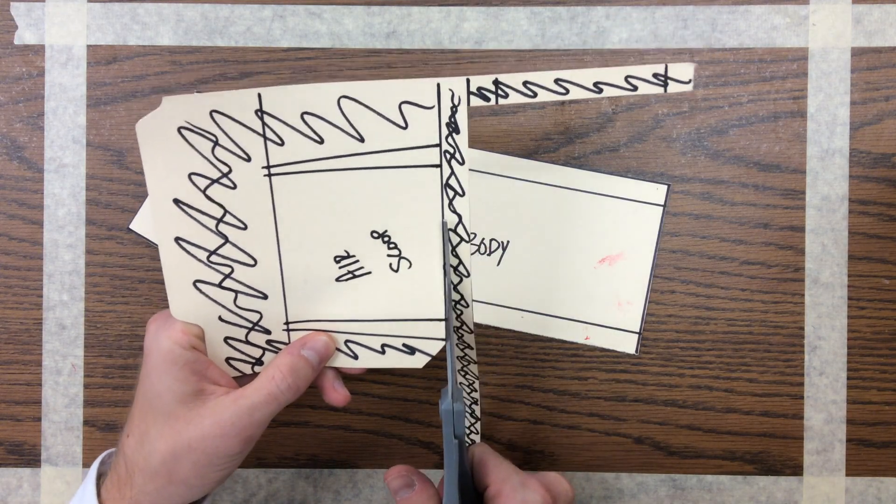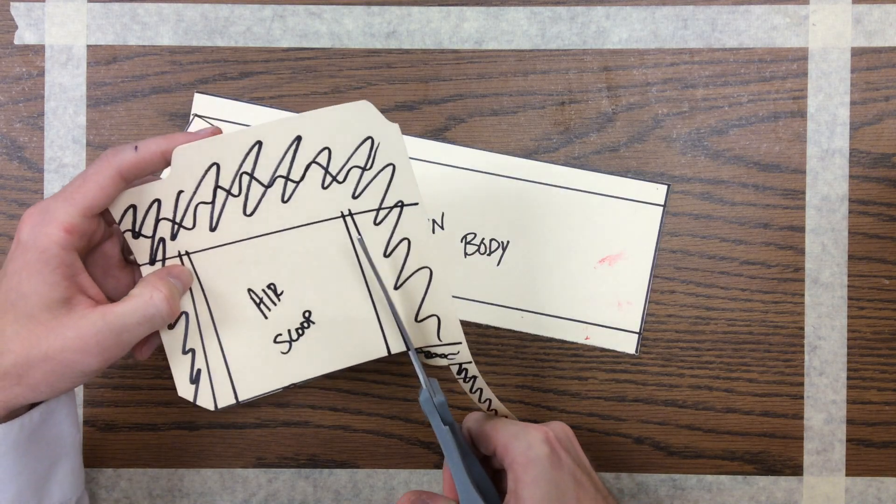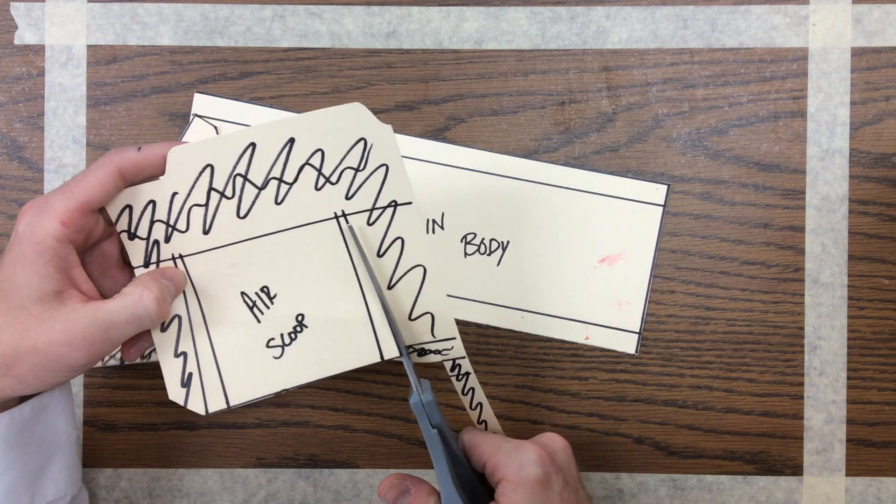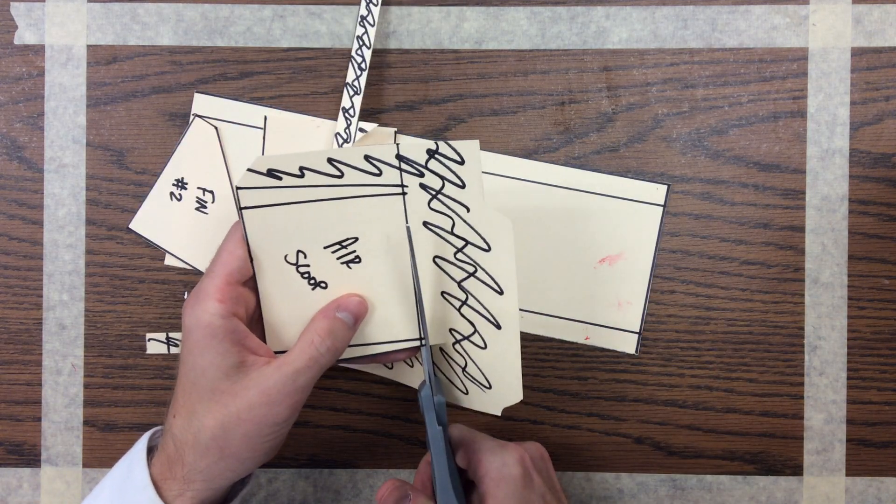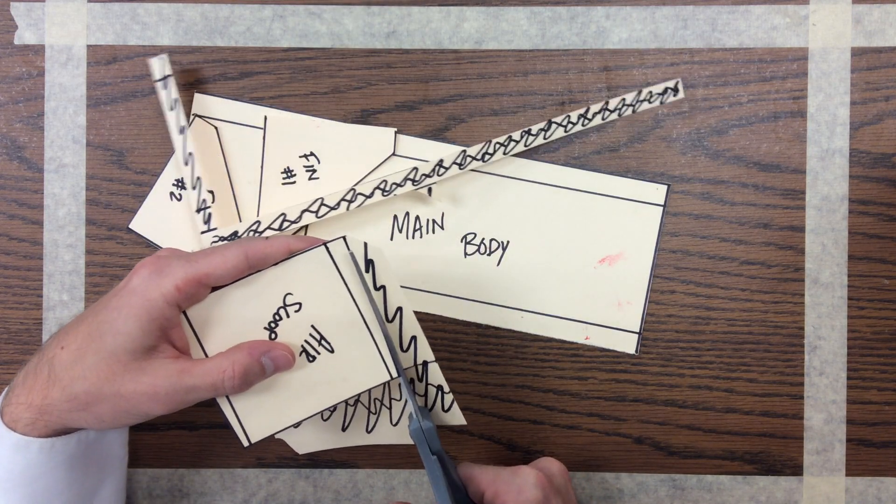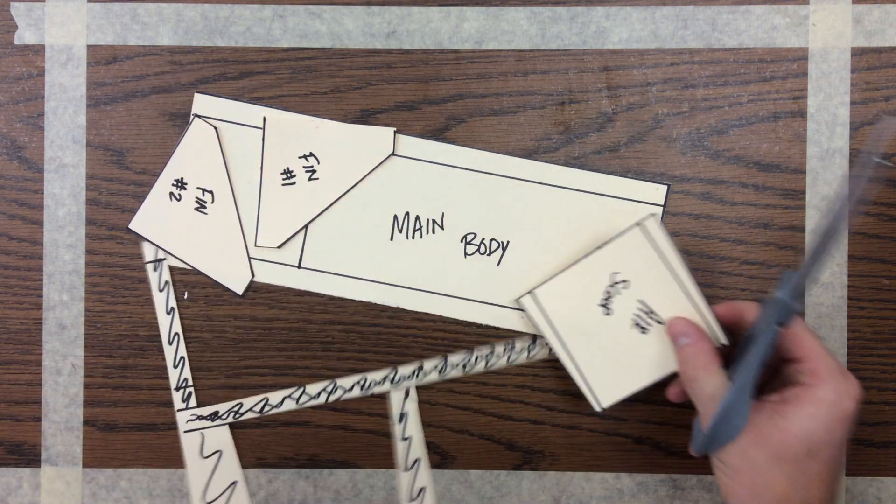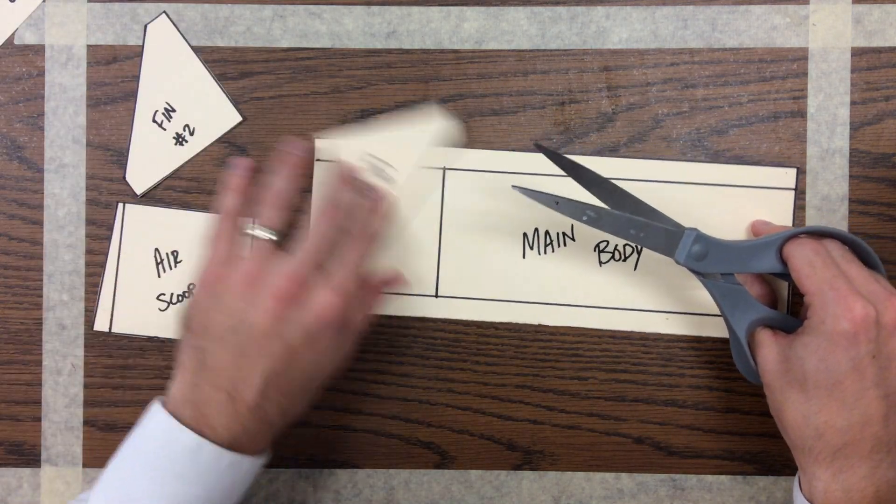Notice again clean, accurate, precise cuts. I want to make sure that we are getting the most out of our skimmer and that comes from having great measurements and these good cuts. So air scoop's cut out. Fins are cut out.